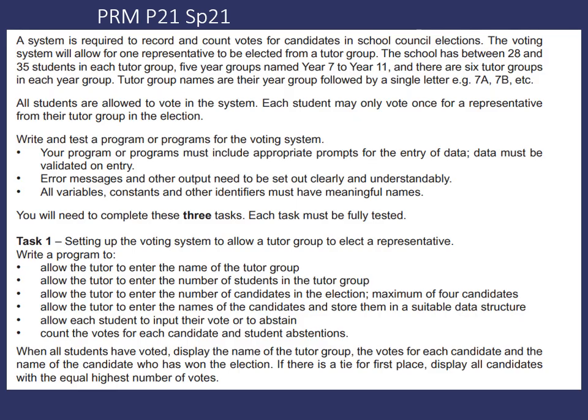A system is required to record and count votes for candidates in school council elections. The voting system will allow for one representative to be elected from a tutor group. The school has between 28 and 35 students in each tutor group, five year groups named year 7 to year 11, and there are six tutor groups in each year group. So that's a total of 30 classes.